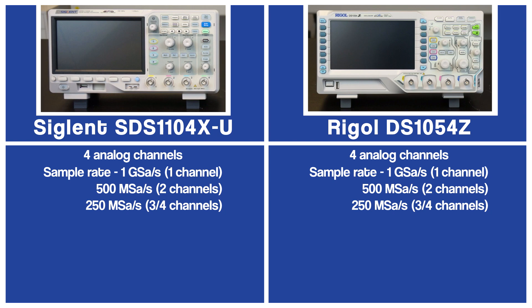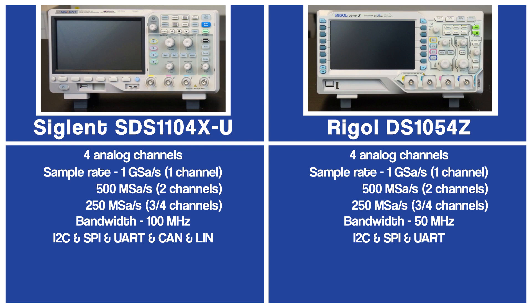The sample rate determines how frequently the input signal is being sampled in one waveform or cycle. In addition, the Siglent has a bandwidth of 100 MHz but the Rigol only has half of that. Both oscilloscopes also come with a variety of serial decoding options. Both can use I2C, SPI, and UART decoders, but the Siglent also has options for CAN and LIN decoders.